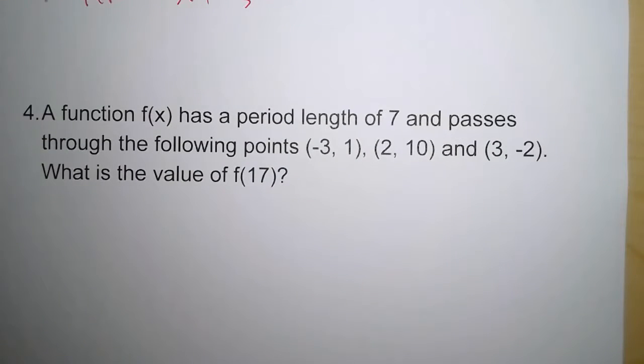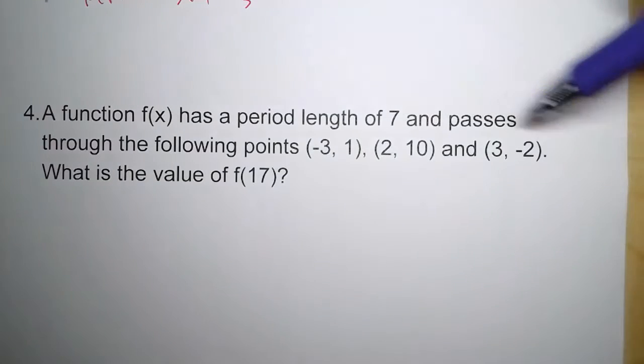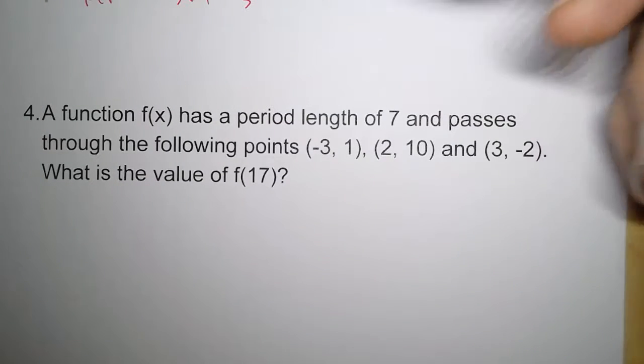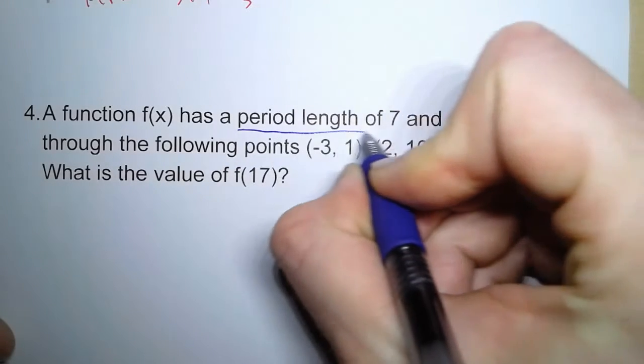Now the final question doesn't involve a graph. Rather, it just involves a description. It just asks this one question. If it has a period length of seven, and passes through these three points, what's the value of 17? Now notice we're not given an equation, we're not given a graph. But what we are given is this piece of information right here. That's the key.